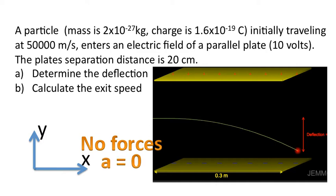When there are no forces that means the acceleration is zero. And that's why previously we saw that the speed in the x-direction or the velocity in the x-direction did not change. It held steady at 50,000 meters per second. In the y-direction there are forces.